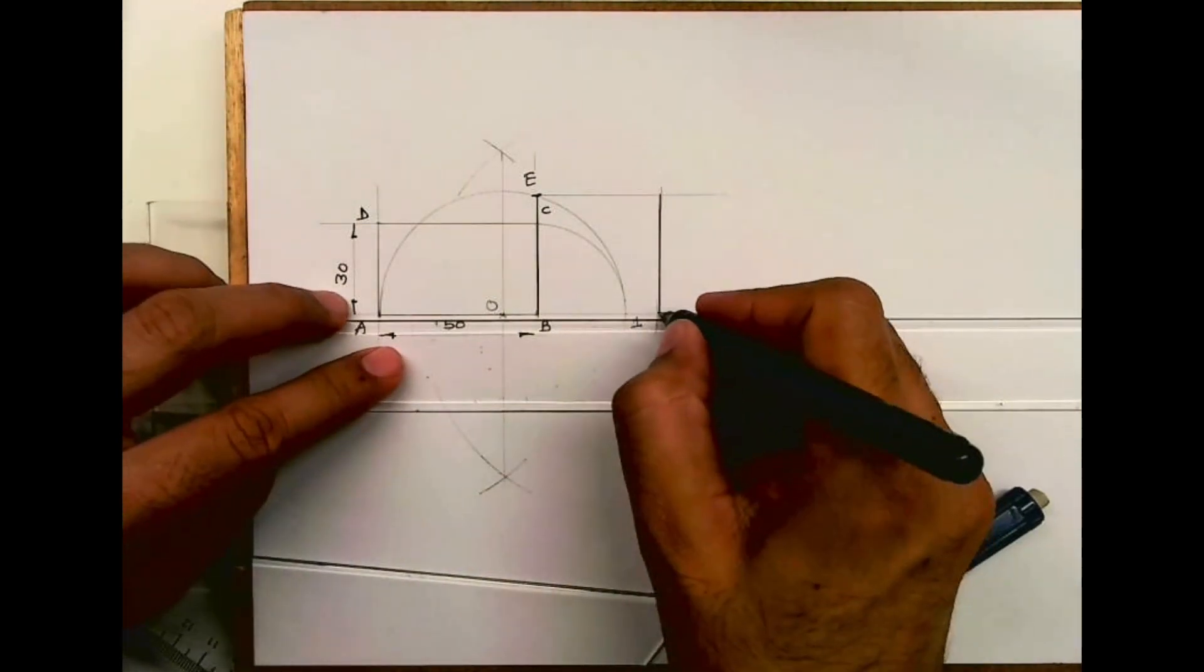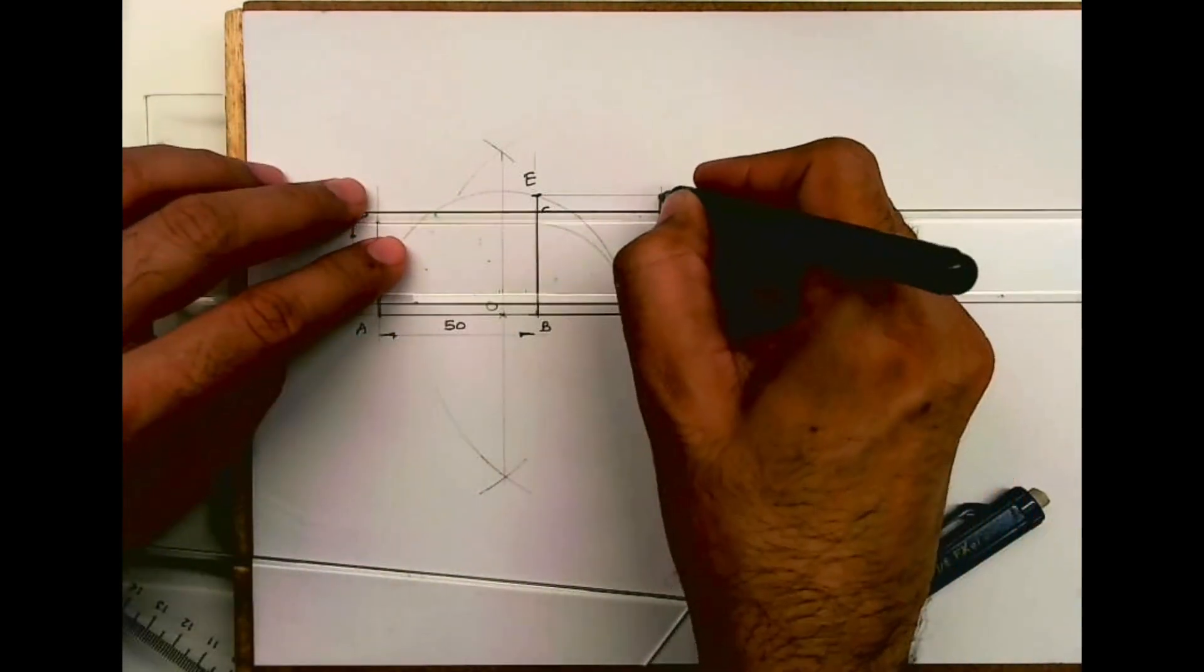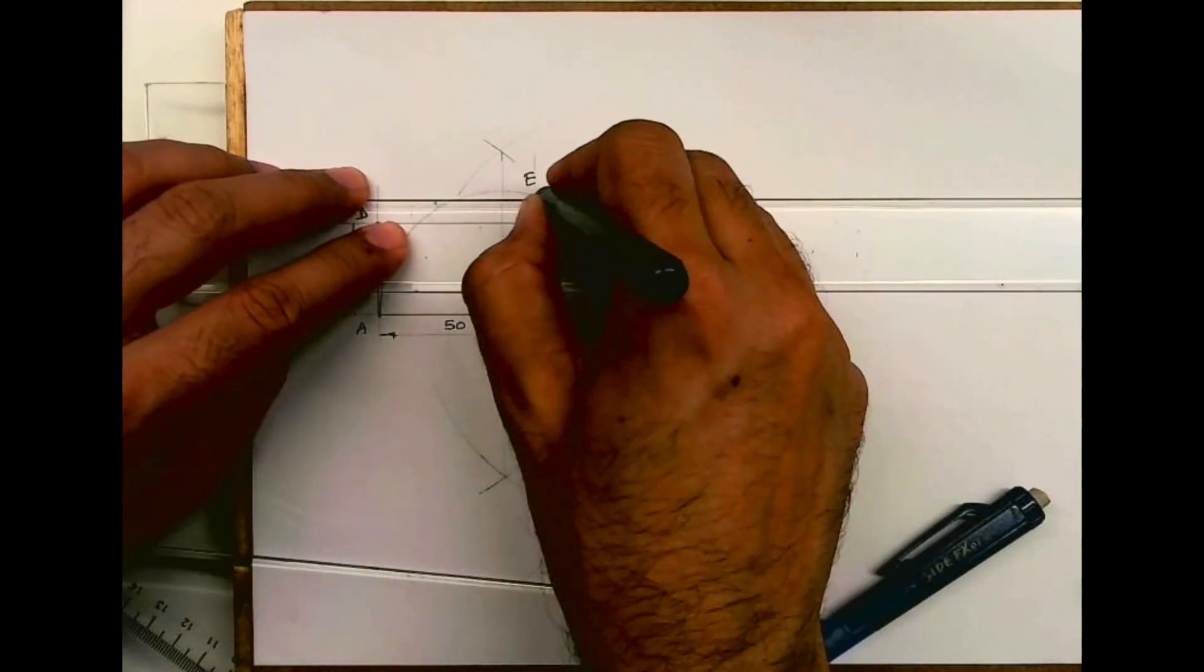So this way we have converted a rectangle into a square. I hope you have understood this. Thank you.